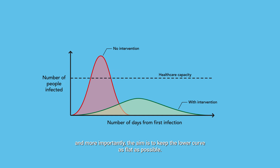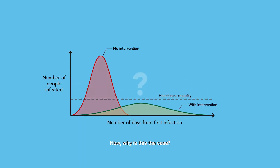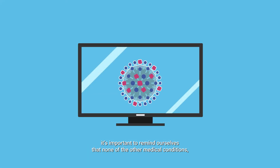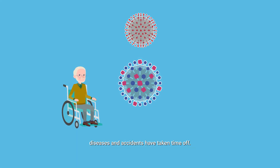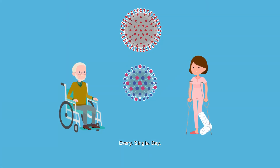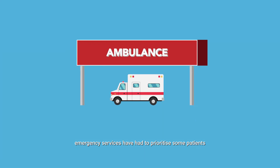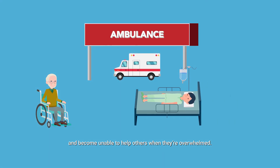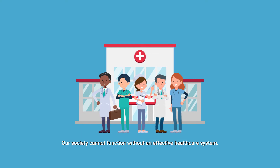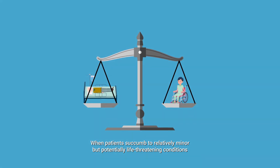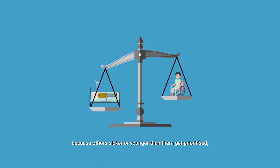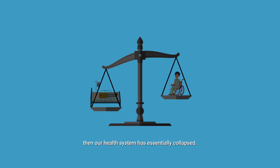More importantly, the aim is to keep the lower curve as flat as possible. Although the virus is taking centre stage in the media, it's important to remind ourselves that none of the other medical conditions, diseases, or accidents have taken time off — they're still happening every single day. During difficult times, emergency services have had to prioritise some patients and become unable to help others when overwhelmed. Our society cannot function without an effective healthcare system. When patients succumb to relatively minor but potentially life-threatening conditions because others sicker or younger than them get prioritised, then our health system has essentially collapsed.